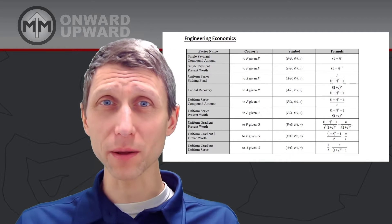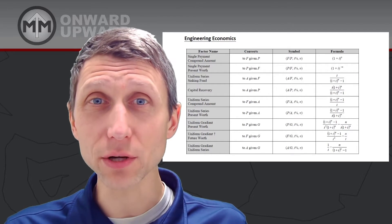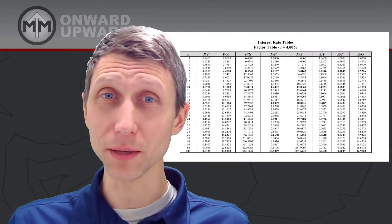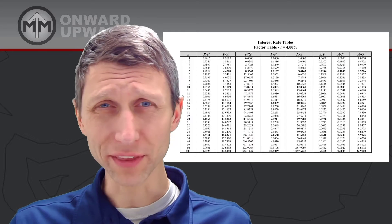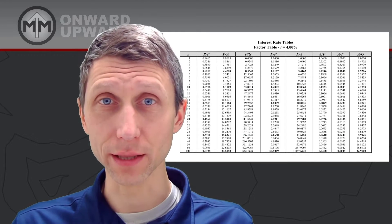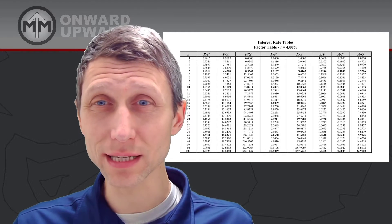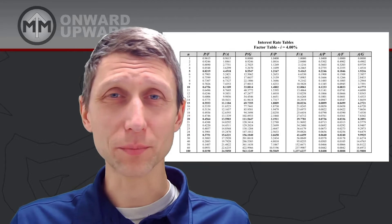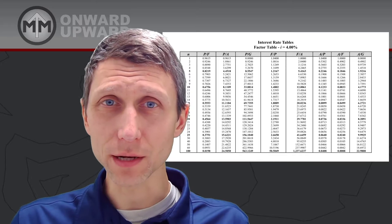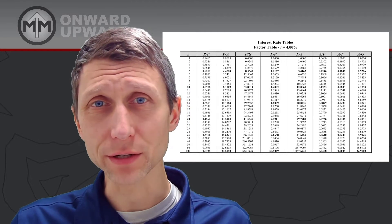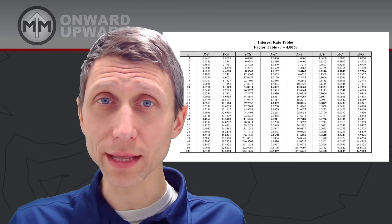Even in our program we teach this with spreadsheets, but on the exam you don't have a spreadsheet — you have to use a table. These tables really simplify things; you don't have to worry about exponents and order of operations in your calculator. You just have to use the right table. Engineering economics uses different factors, like present value given future value or future value given present value, and you look them up for the number of years at the right interest rate.